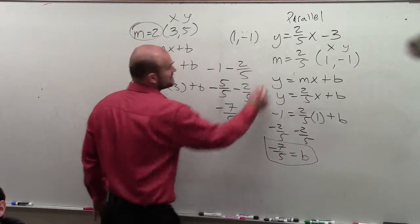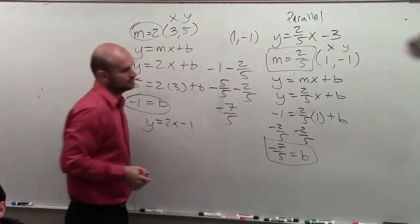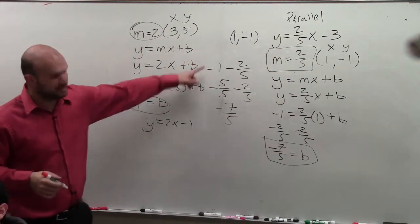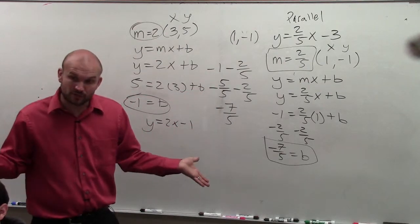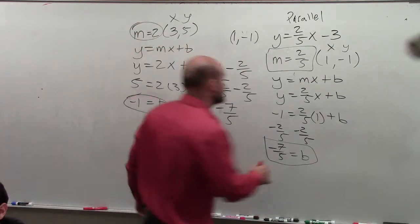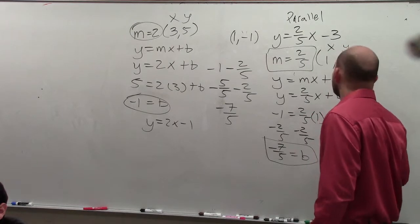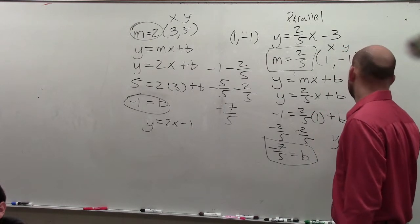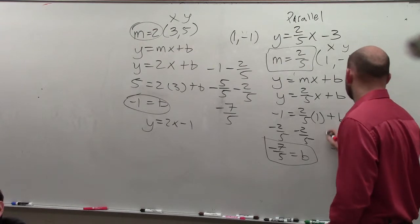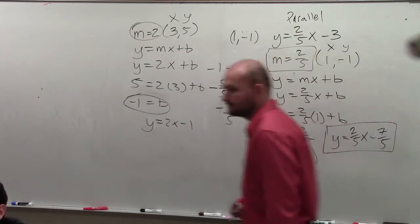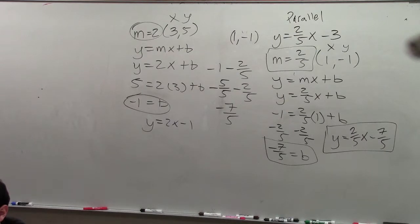So now I know what b is, and I know what m is. See what I did? How I did my fractions? Okay, now I know b and I know m. So can I write the equation? I know b and m. Yeah. Less than y equals 2 fifths x minus 7 fifths. And that's my answer. Okay, now for the perpendicular one.